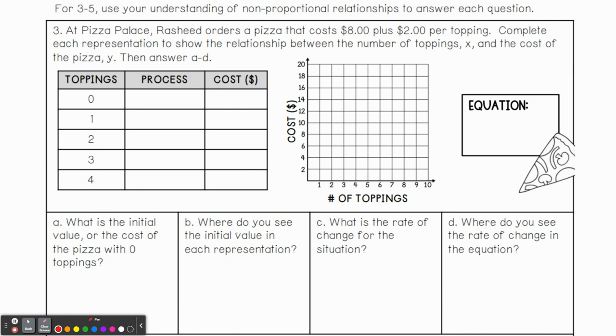At Pizza Palace, Rashid orders a pizza that costs $8 plus $2 per topping. So let's go ahead and complete this table here. So we have $8 plus $2 per topping. So hopefully you can figure out what our constant is and what our variable is here because we've talked about writing out equations for this before. So at zero toppings, we would say our cost is $8. In other words, we would write it as eight plus $2 per topping times zero. Zero toppings.